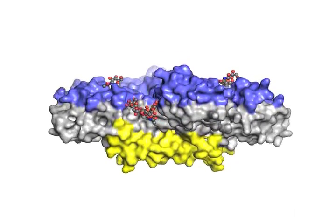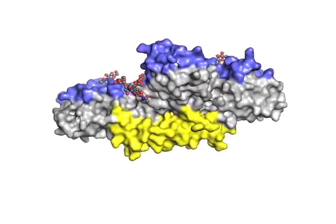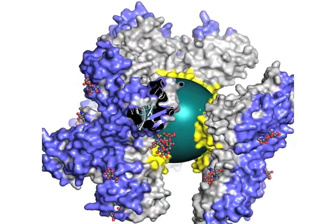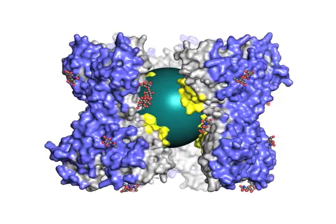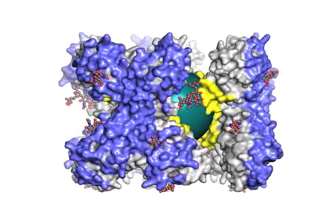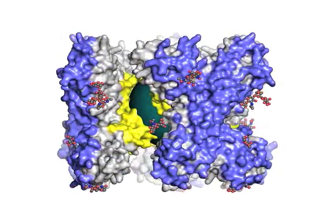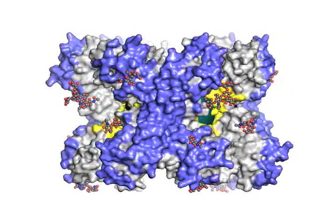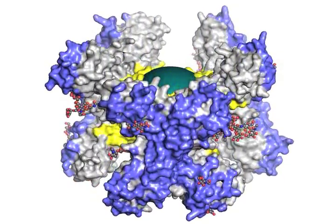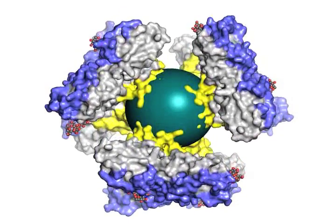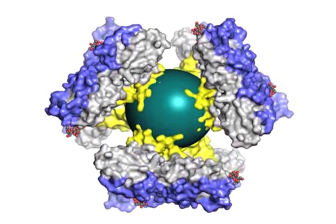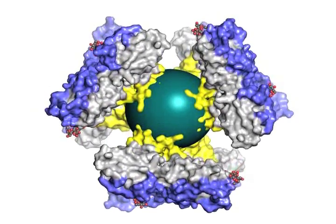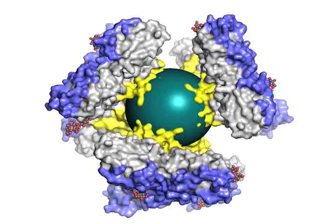NS1 also gets secreted by cells and ends up in the bloodstream of people who are infected with flaviviruses. In this case, it's the blue outer surface that is interacting with other molecules in the bloodstream, most specifically proteins of the immune system. What we see in the crystal structures is that NS1 can actually form a package, and we know when it's in the bloodstream that it's a protein package that contains lipid molecules. Here we've represented the lipids as a teal-colored sphere in the center, so the protein comes together with the yellow greasy bits on the inside interacting with lipid molecules, and the blue polar surface and the sugars on the outside.